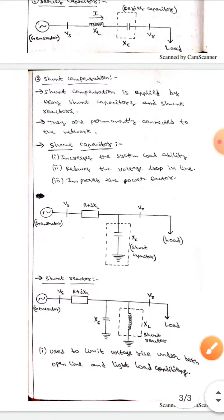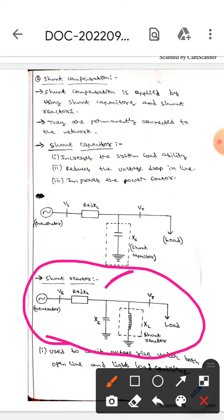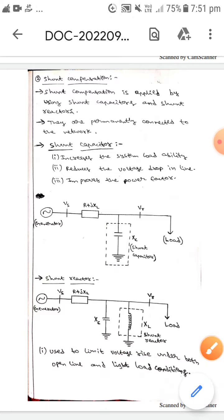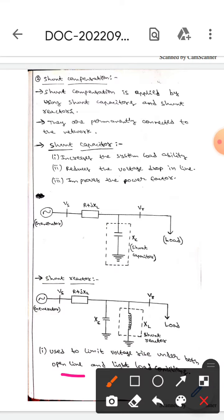The next one is shunt reactor. This is the diagram for shunt reactor compensation. It is used to limit the voltage rise under both open line and light load conditions. This is the shunt reactor.